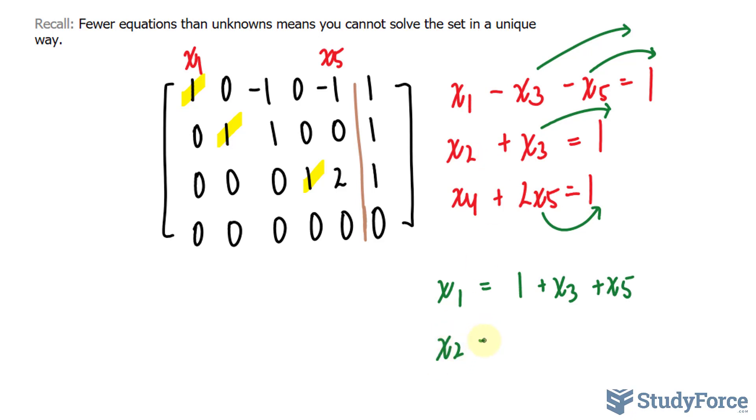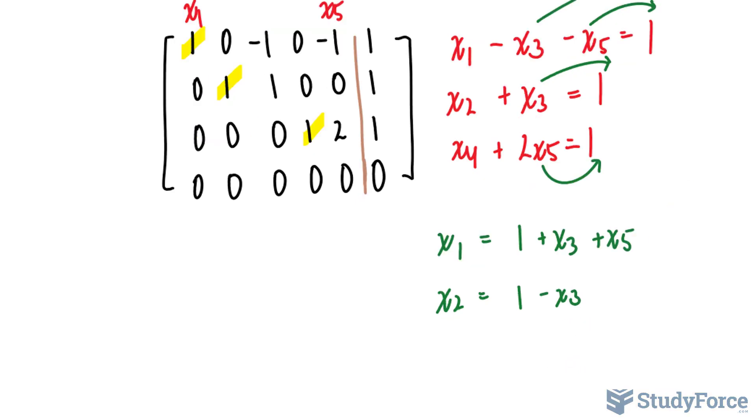For this equation, x sub two is equal to one minus x sub three. And for this last one, x sub four is equal to one minus two times x sub five.